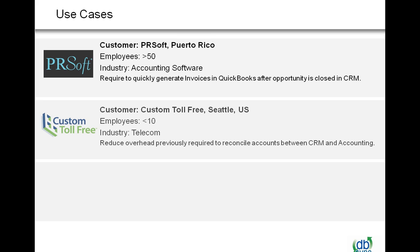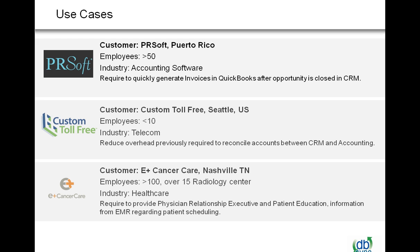Custom Toll Free is a small business in Seattle, Washington. They have less than 10 Salesforce users and they're in the telecom industry. They use dbSync to reduce overhead costs — there are no calls or emails going back and forth to generate invoices or reconcile accounts between Salesforce and QuickBooks. They can quickly generate invoices from QuickBooks into Salesforce so the salesperson can see it, reducing overhead costs dramatically, which for a small firm is a huge cost savings.